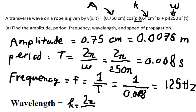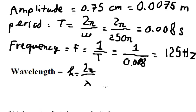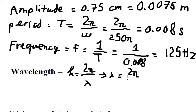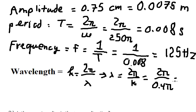We have k equal to 0.4π. To find the wavelength lambda, we rearrange — bringing the lambda to the left. Calculating this, we get lambda equals 5 centimeters, which is 0.05 meters.